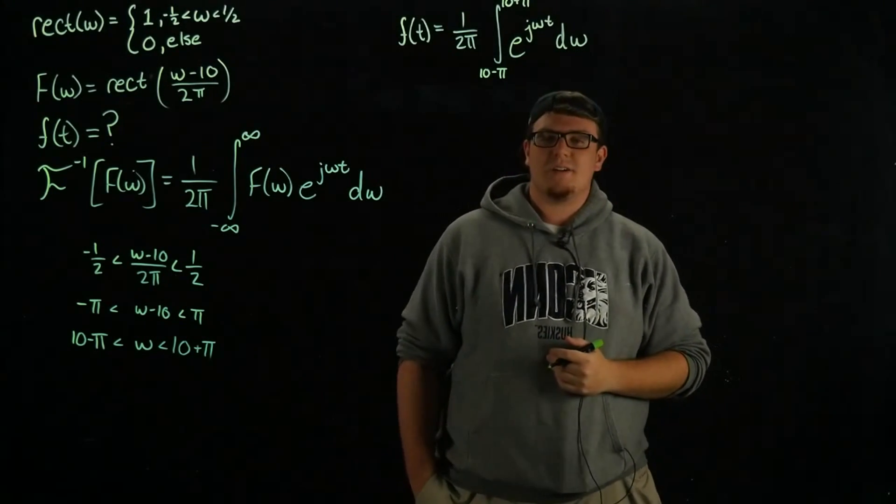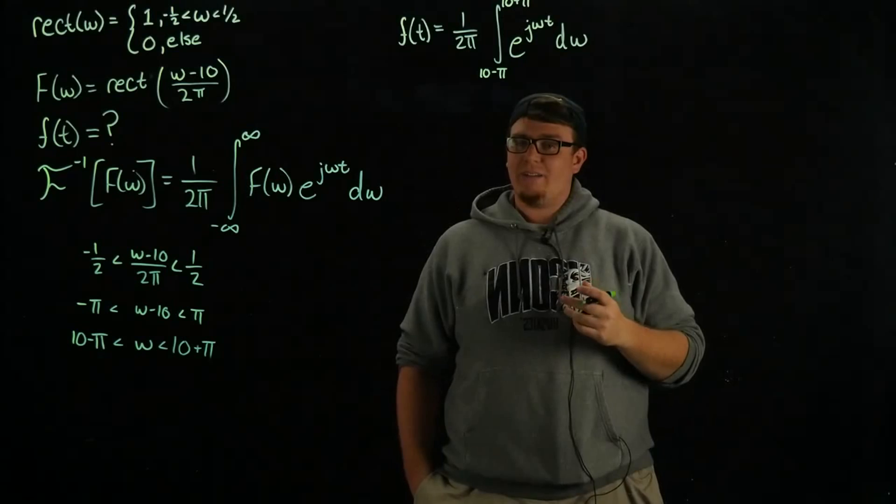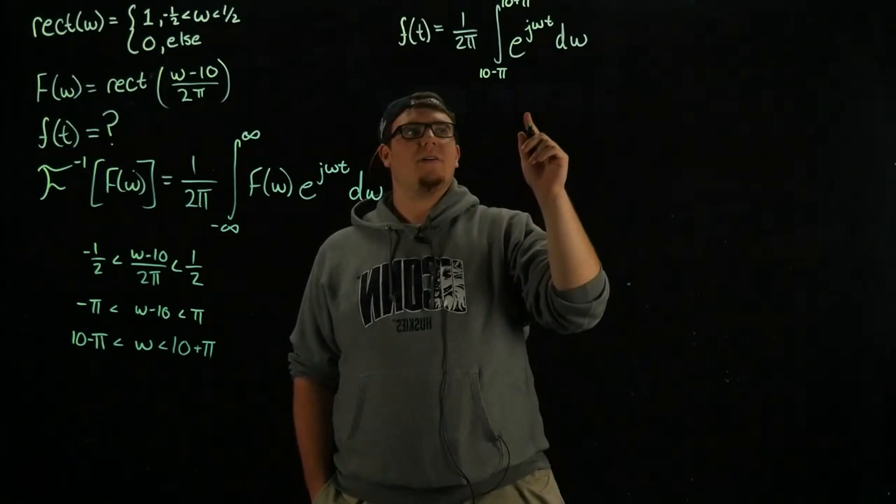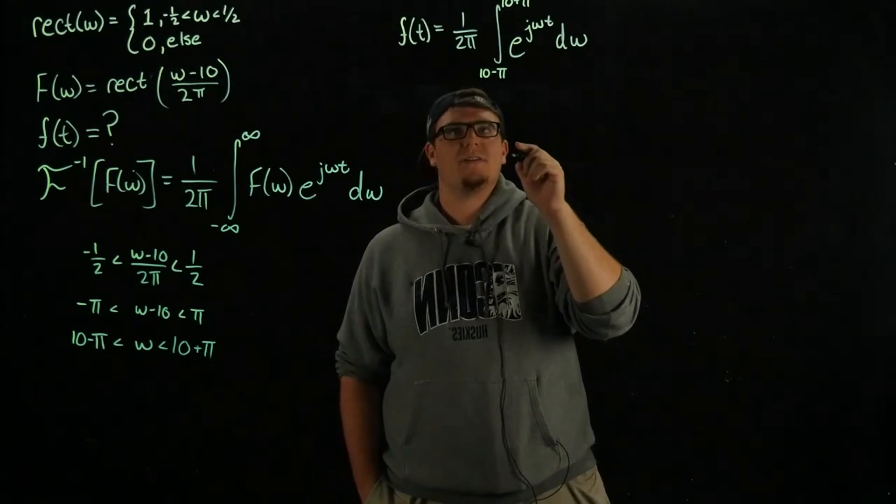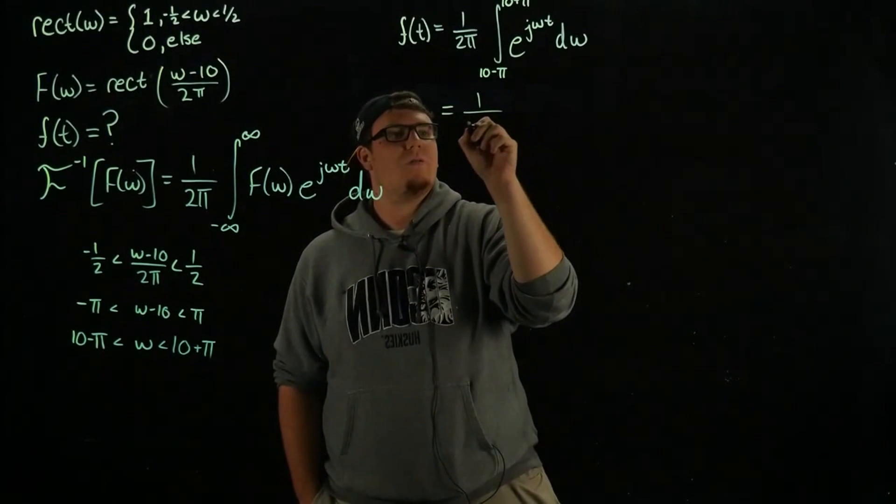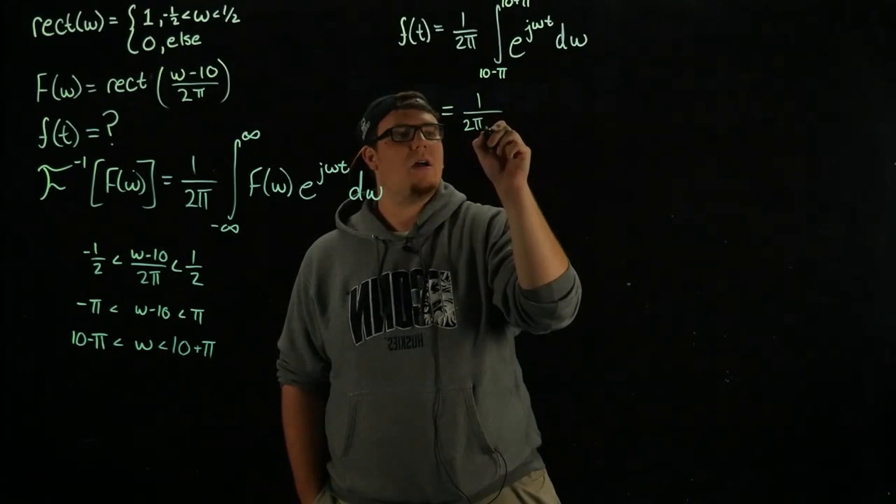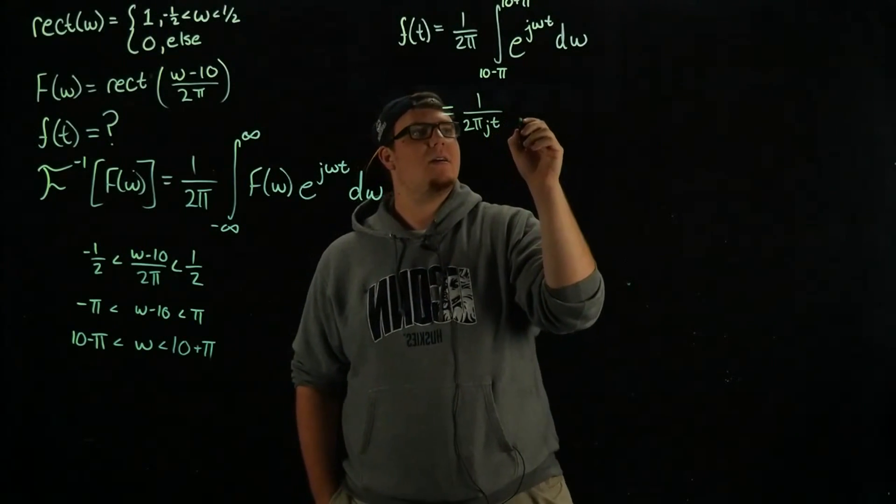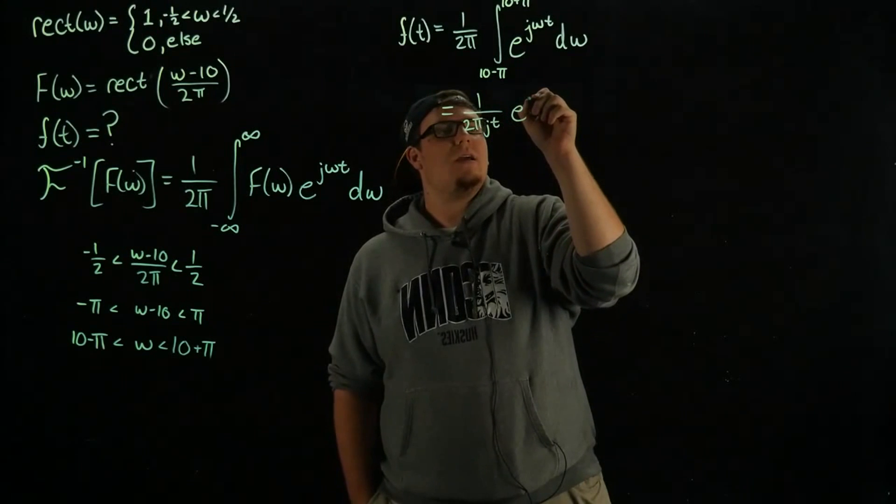This is just integrating an exponential function, not too difficult. The integral of an exponential function, we end up with 1 over 2 pi j t e to the j omega t.